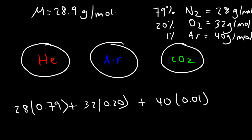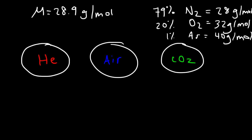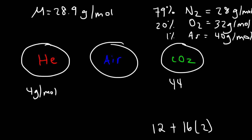Helium is a very light gas with an atomic mass of 4 g/mol. Carbon dioxide is a heavy gas: carbon has an atomic mass of 12 and oxygen is 16, multiplied by 2, giving CO₂ a molar mass of 44 g/mol. As you can see, carbon dioxide is heavier than air, so a balloon filled with carbon dioxide is going to sink.